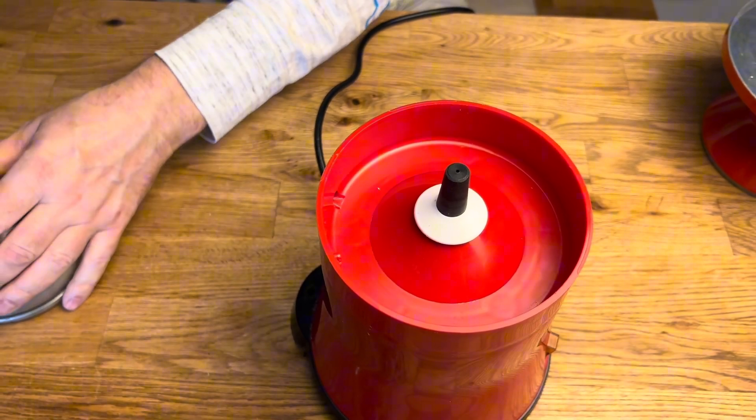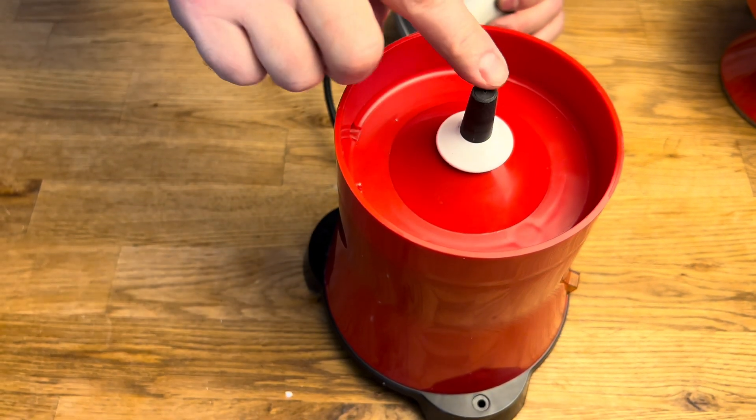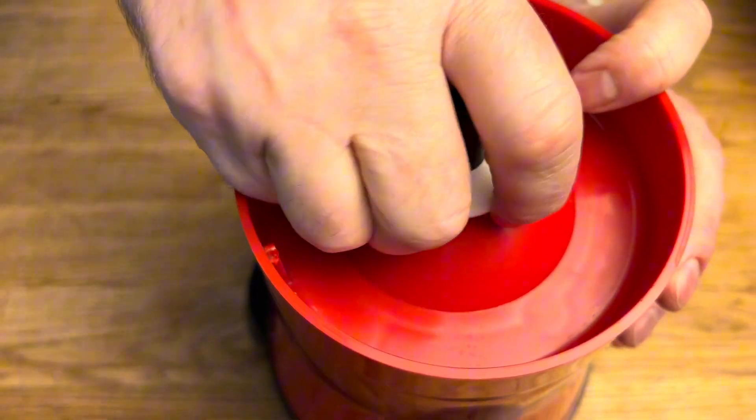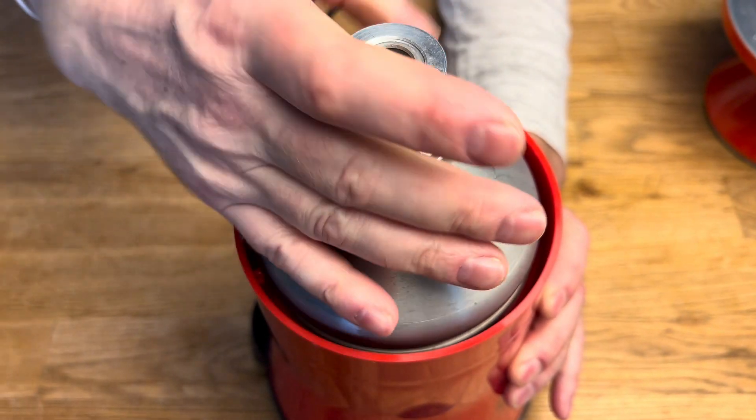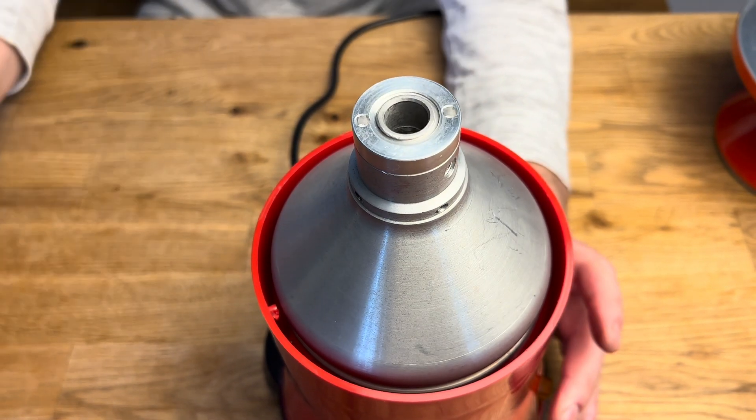Then you can put everything back. You close the bottom. You put the white part. It has to click when you put it on. Then you put the drum. Again, try to see how it spins.